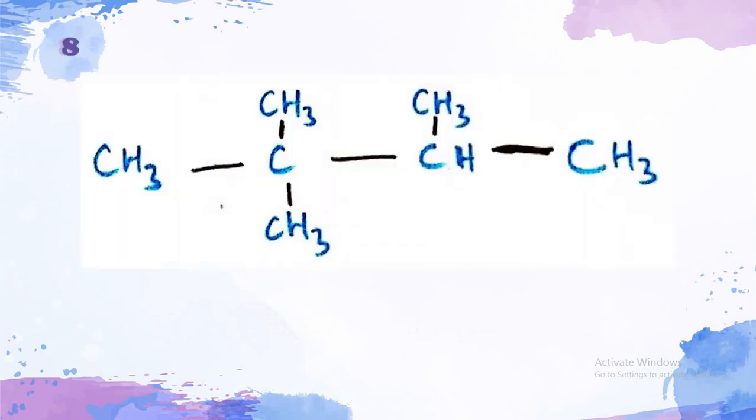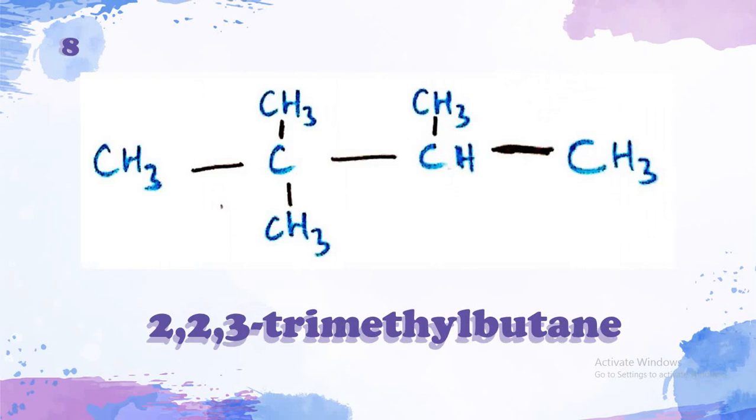And then, the eighth isomer has 3 methyl branches. Two at the second carbon atom and one at the fourth carbon atom. And its main chain is a pentane. So, it's called 2,2,4-trimethyl pentane.